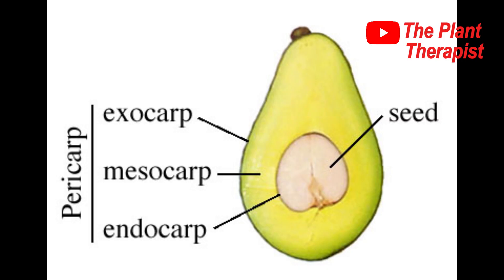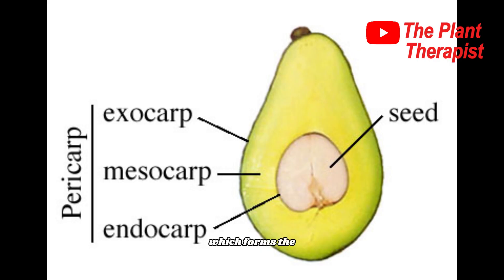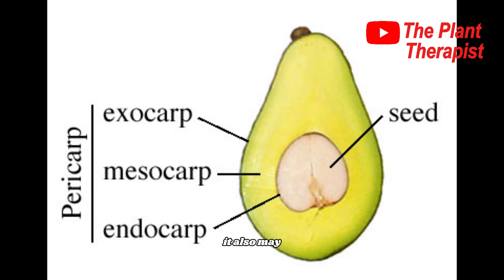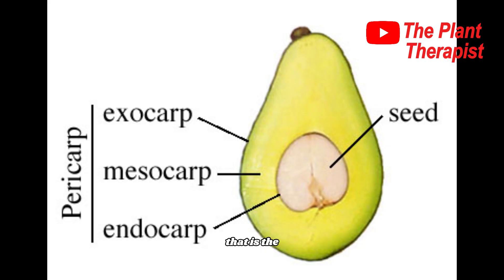Most mature fruits have three regions which sometimes merge and can be difficult to differentiate from one another. One part is the skin, which forms the exocarp, while the inner boundary around the seeds forms the endocarp. The endocarp may be hard and stony, or papery as in apple. Sometimes the endocarp merges with the mesocarp, which is the fleshy tissue between the exocarp and the endocarp.